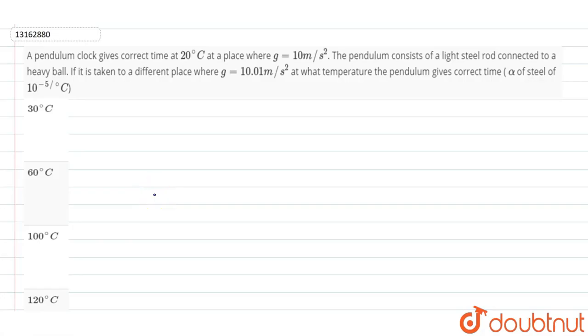The question here is that we have a pendulum clock which gives correct time at 20 degrees Celsius. It means that this clock which we have at 20 degrees Celsius is correct in any place where the acceleration due to gravity g value is 10 meters per second square.